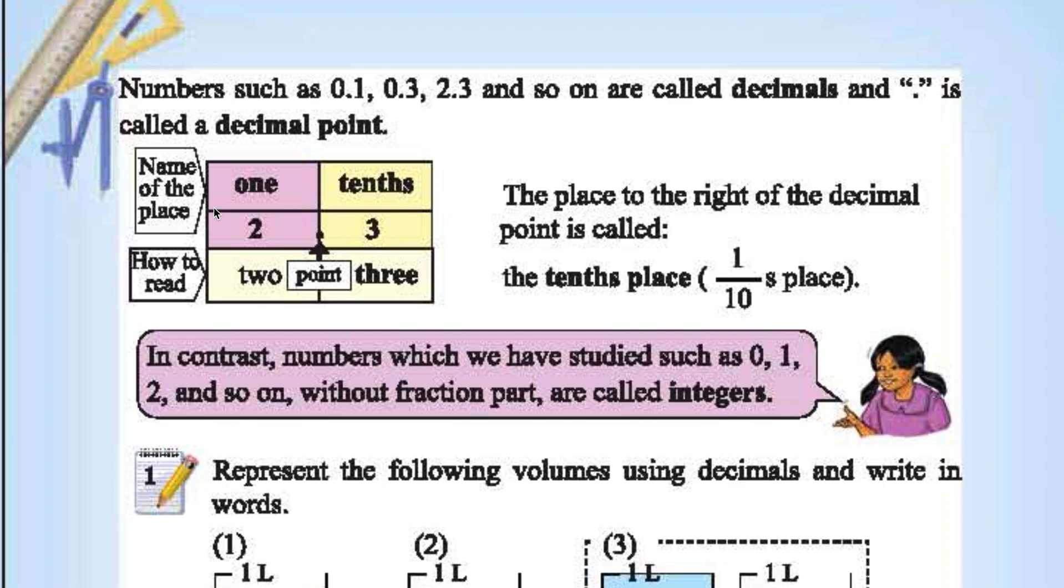On the number scale, 2.5. This represents 1 and this represents 10th. For example, 2.3. This place value is 10th. Place value of 2 is 1. Place value of 3 is 10th. It is called 10th place.